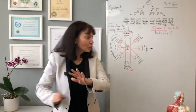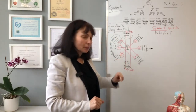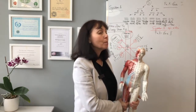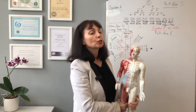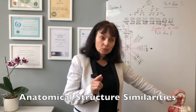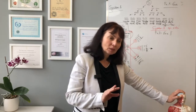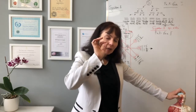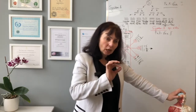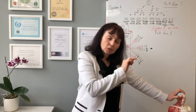The pain will go away straight away. The same applies to any couples. There is a rule for how to choose the best meridian to needle, and we call this rule 'anatomical structure similarities.' This rule says that tissues must be similar. If the pain is in the bone, we must find the similar bony structure, and if the pain is deep on the bone, we must touch the bone with our needle on the corresponding meridian.